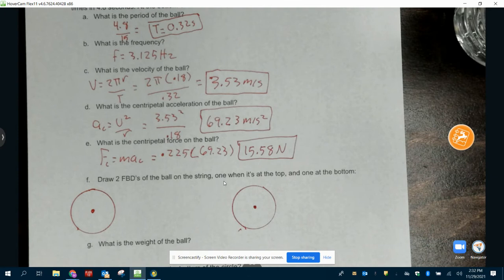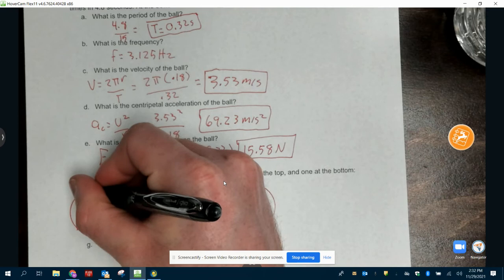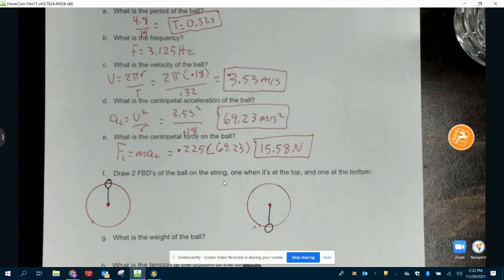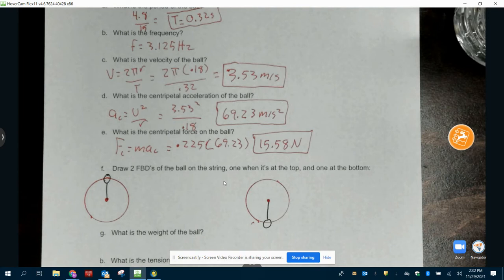You've got to draw two free body diagrams of the ball and the string, one when it's at the top and one when it's at the bottom. So we're saying, hey, let's draw one when the ball is here and let's draw one when the ball is here. When I say a vertical circle, that means I'm swinging it like this.